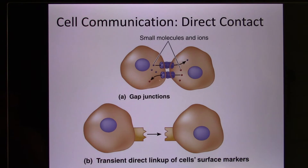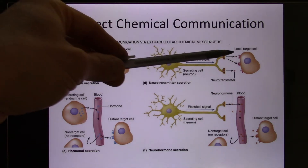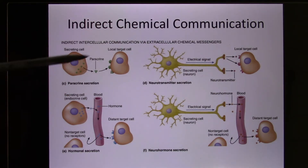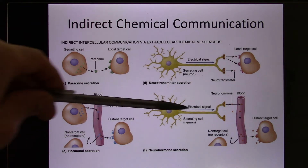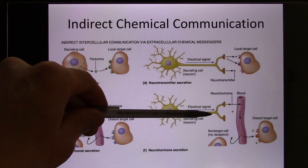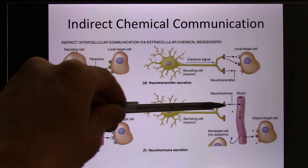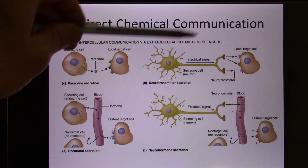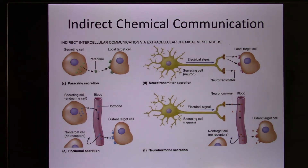We have short-distance communication, and we also have indirect chemical communication. Like a neuron — they release neurotransmitters. Or endocrine cells release hormones, which are carried by the blood. When we talk about neurons, there's a special type called neural hormones — chemical molecules released by neurons from the posterior pituitary gland. We have two neural hormones: oxytocin and vasopressin. We also have paracrine signals, which are local chemical signals picked up by nearby cells.